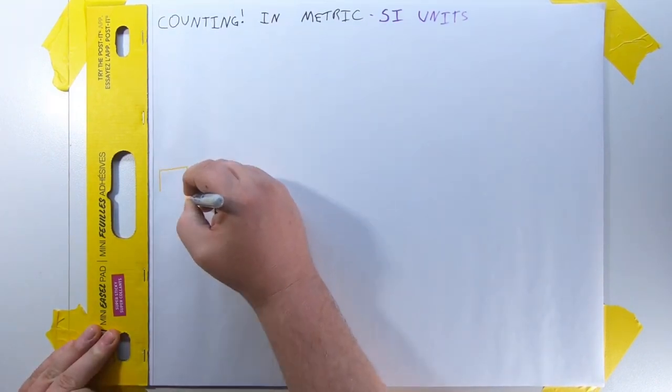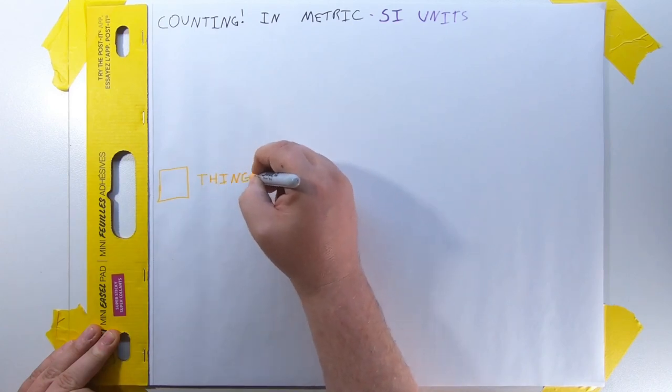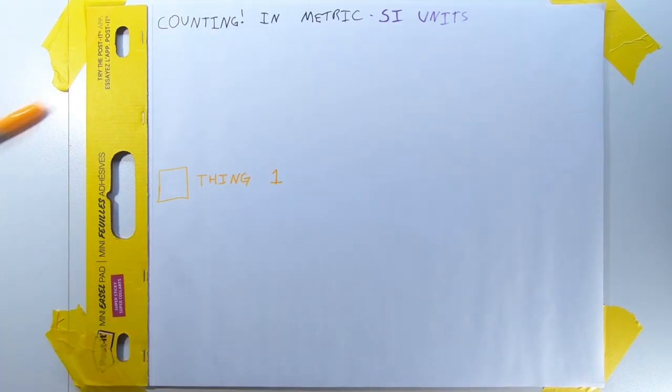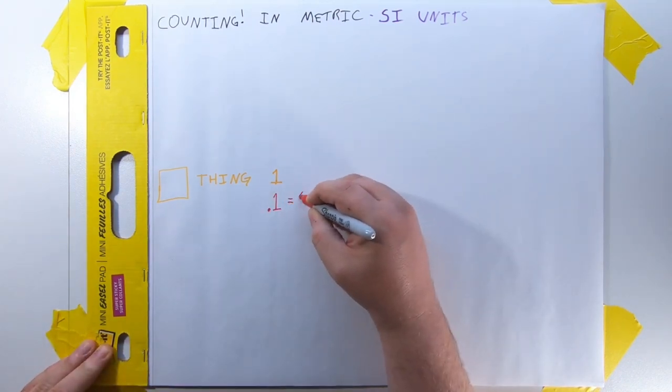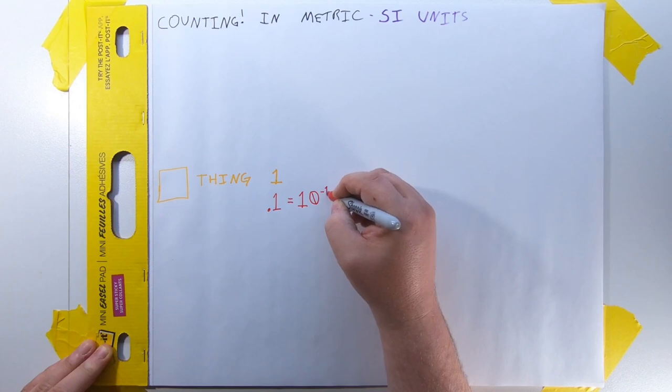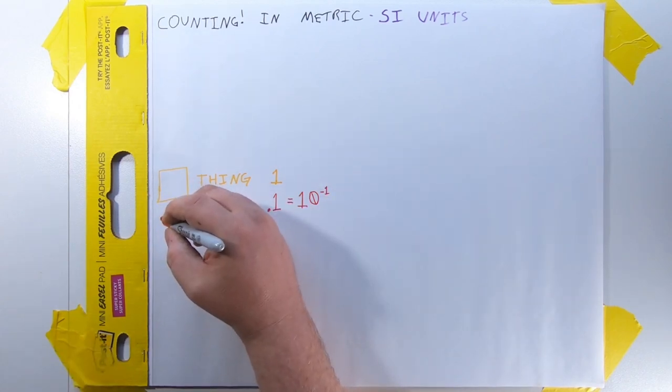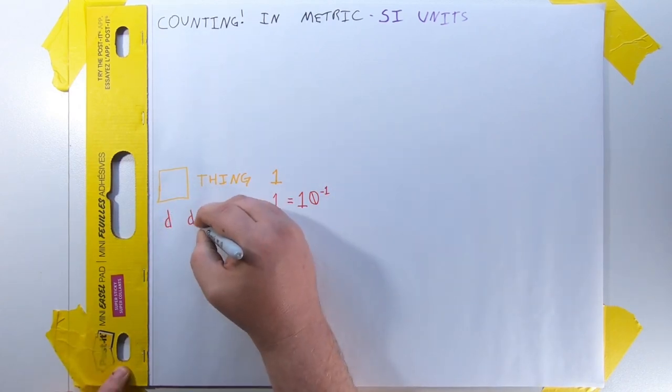Say you have a thing, a singular thing, or five things. No need for a grouping. If you have a tenth of a thing, you have a decithing, or 0.1 things, or 10 to the negative one things. It has the lowercase d as a prefix, which you put in front of the thing you were measuring.